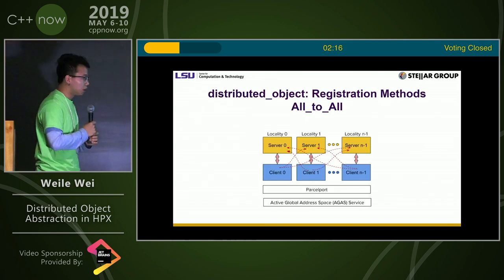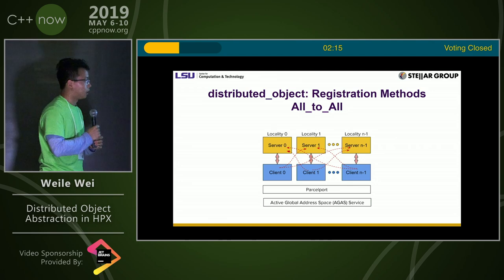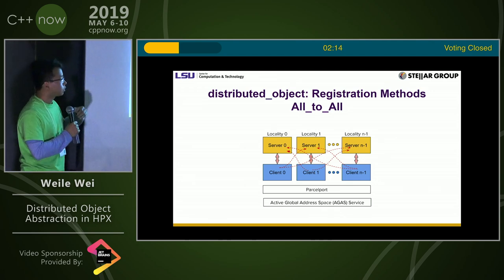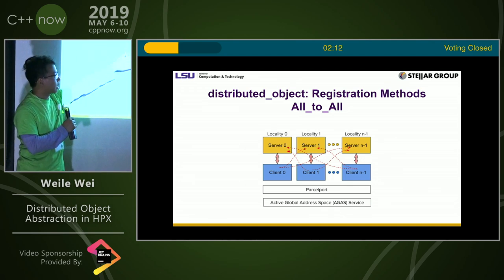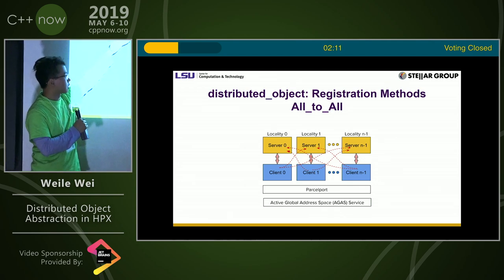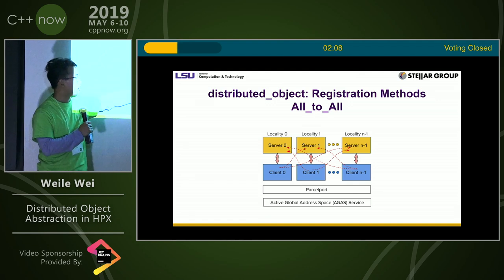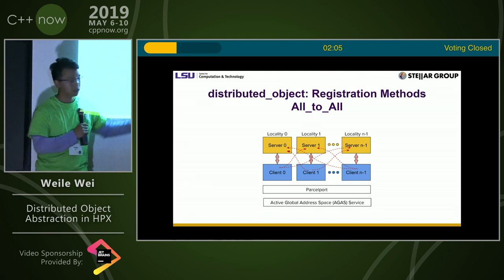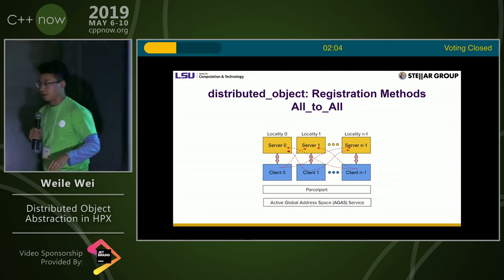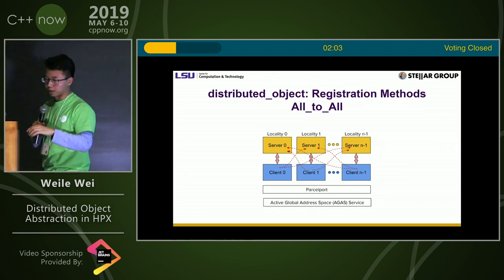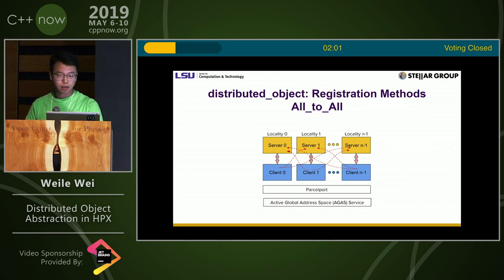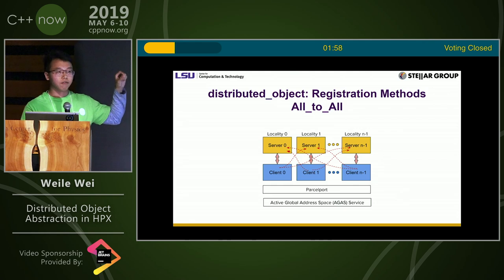The diagram demonstrates that in each locality there is a server and client pair, which is registered into the AGAS as a distributed object component. The red dashed line means that you can fetch the data remotely.